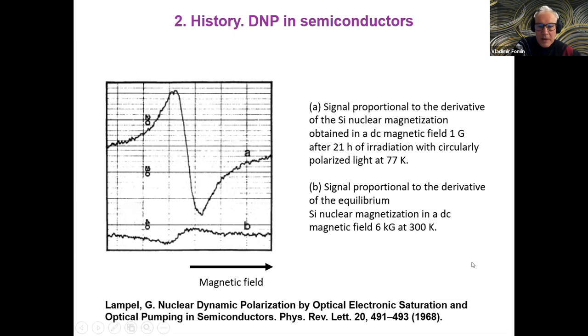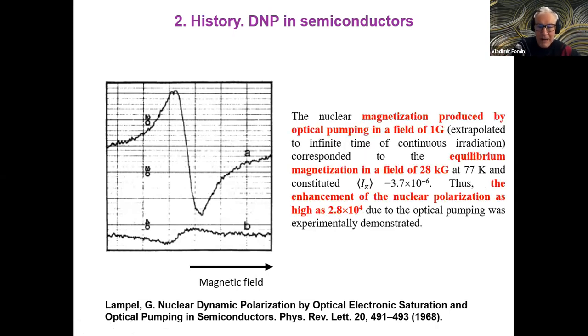Please compare these numbers. This is 1 Gauss and this is 6,000 Gauss. In the first case, due to this dynamical nuclear polarization, the signal is enhanced by more than 3 orders of magnitude. This comparison is given in the next slide, but the value which was measured, it's really small as it's typical for nuclei, but it's confidently measurable.